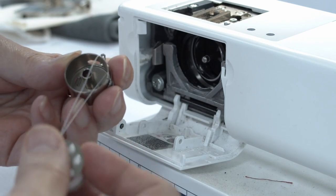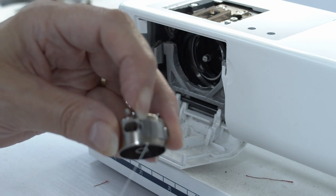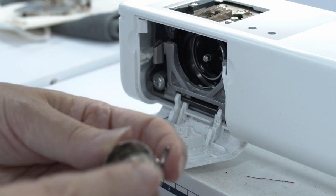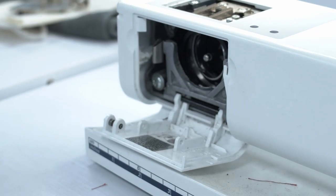I'll take the bobbin case out very carefully, pulling the thread through so I don't damage the back spring here. We will clean this and make sure it's nice and clean from lint in a moment.